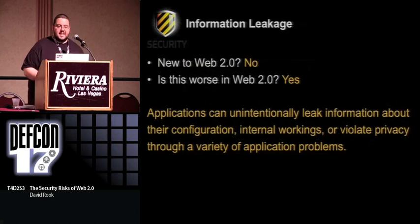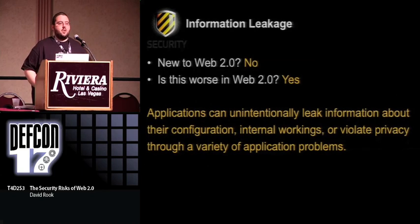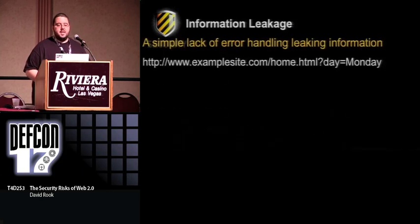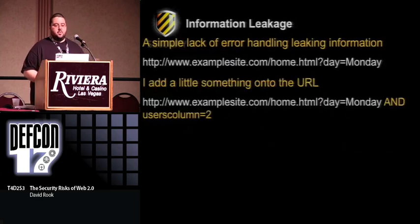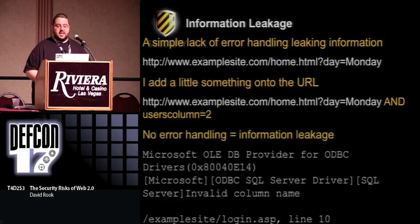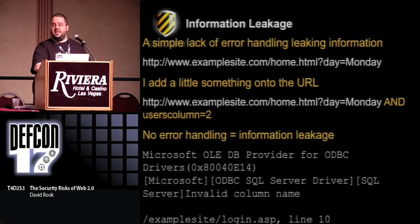I'm going to have to fly through these last few. Next up, information leakage. Really what we're talking about is if your application crashes or someone does a SQL injection attack, you don't spit out internal information back to the user. A simple example: we have a URL with user columns equals 2 on the end, trying to do a SQL injection attack. We don't handle the error properly and it spits out an internal SQL error message back to me.